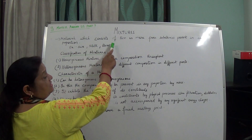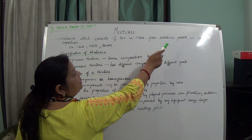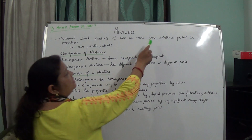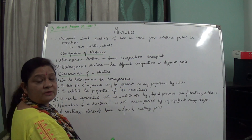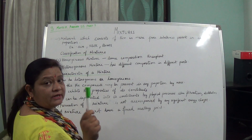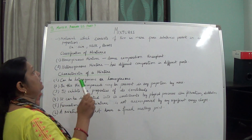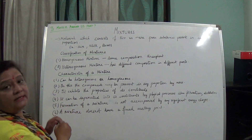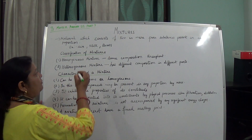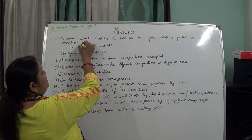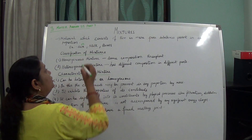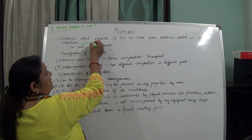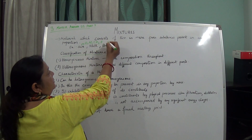Mixtures are materials which consist of two or more pure substances present in any proportion. What do we mean by pure substances? Pure substances means elements and compounds. For example, I have written air, milk, and brass. Air is a mixture and it consists of oxygen, nitrogen, carbon dioxide, and inert gases.